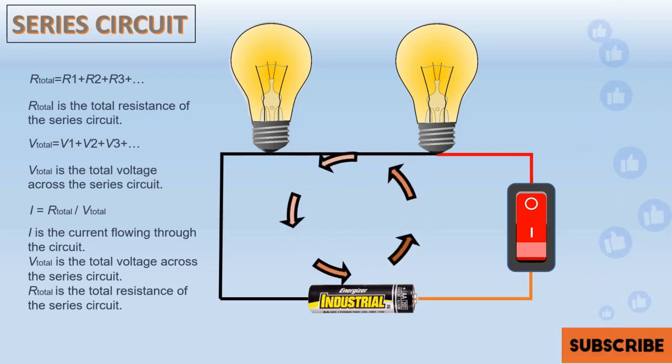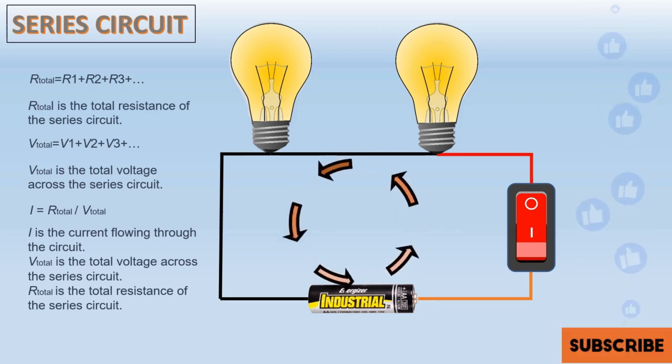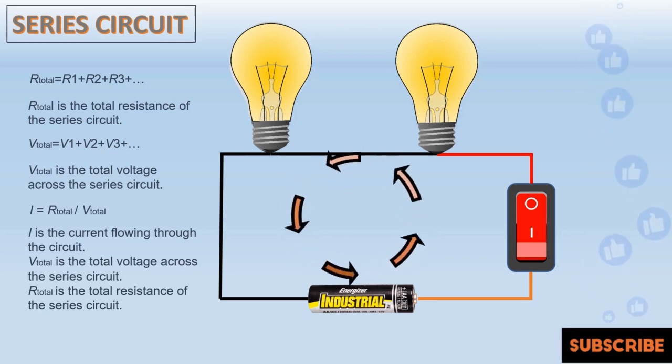The total voltage of the circuit is the sum of the individual voltage drops across each component. The voltage across the entire circuit is equal to the sum of the voltages across each resistor. V_total = V1 + V2 + V3...